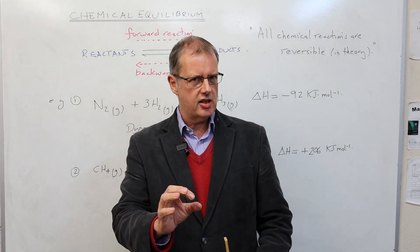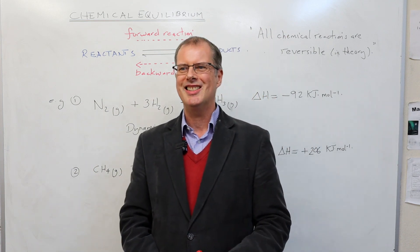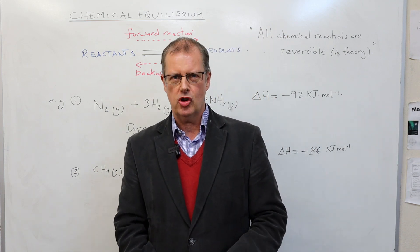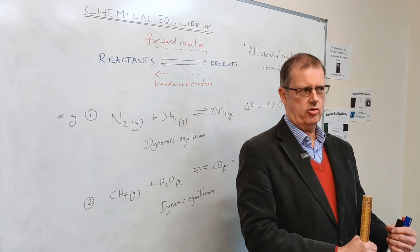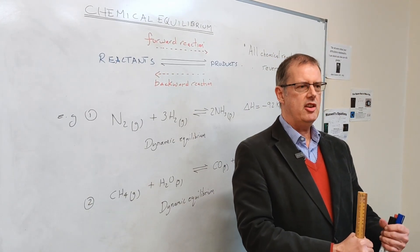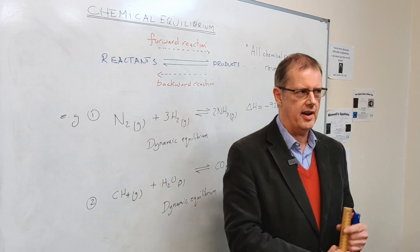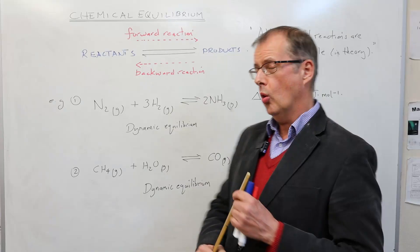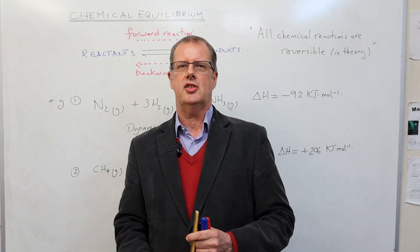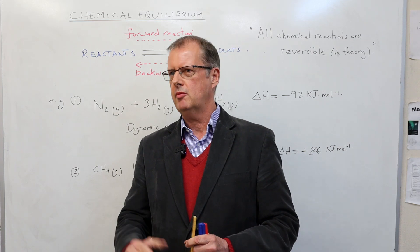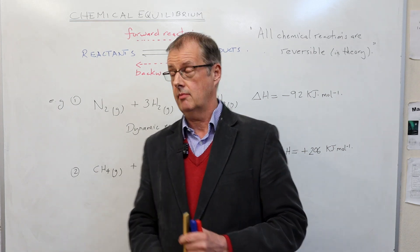To achieve a state of dynamic equilibrium we need constant temperature and pressure. As soon as you start changing the conditions, you shift the position of equilibrium. Also, this has to happen in what we call a closed system — a closed system is where material can't move in and out.